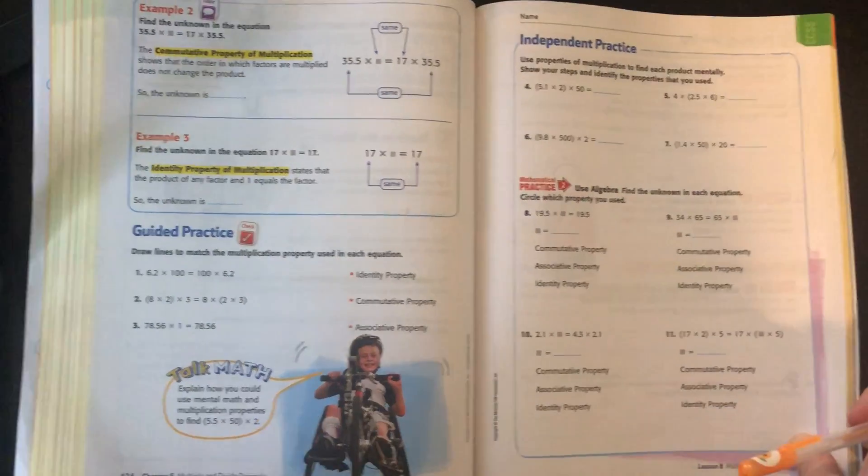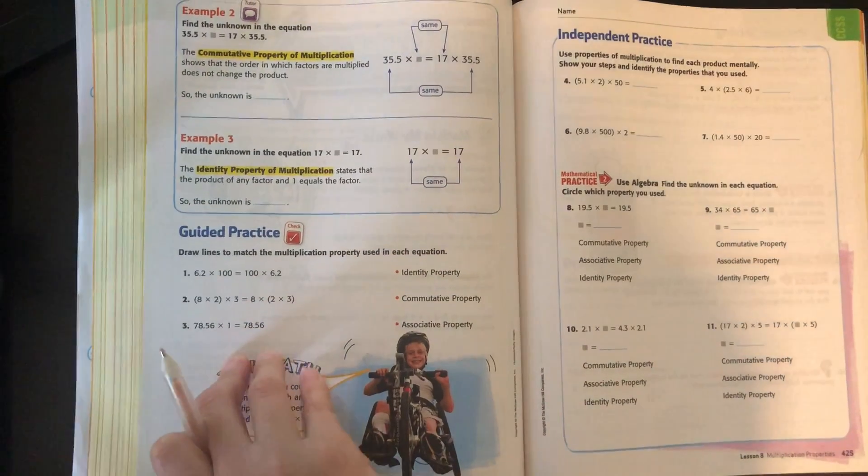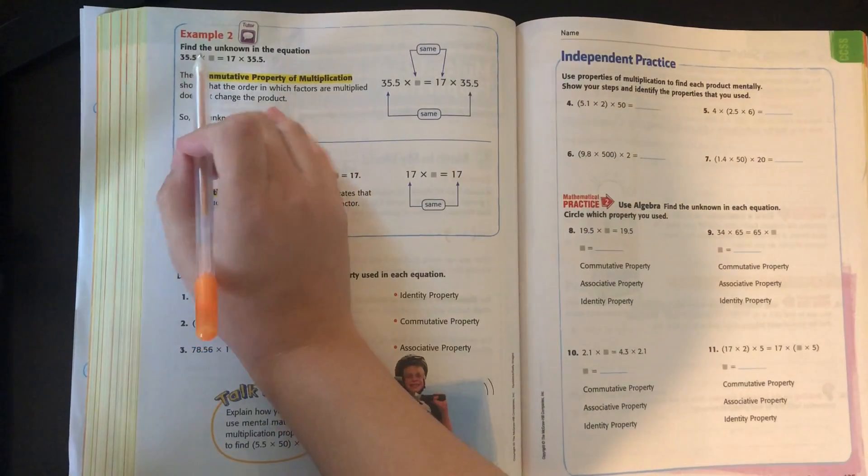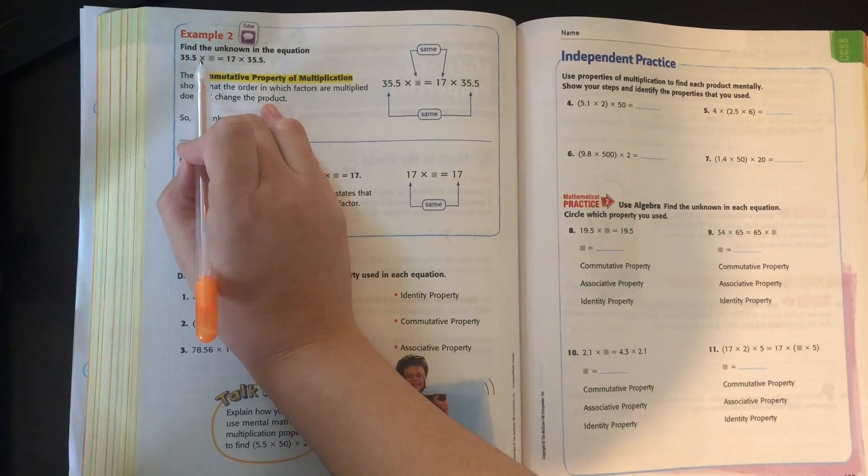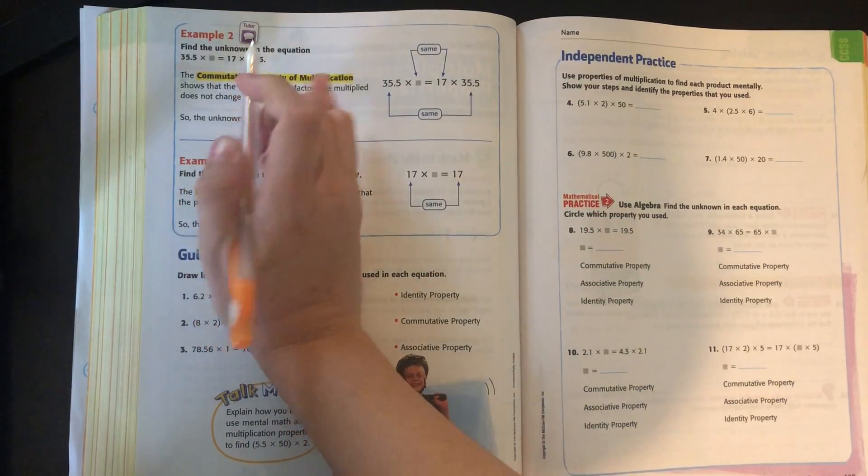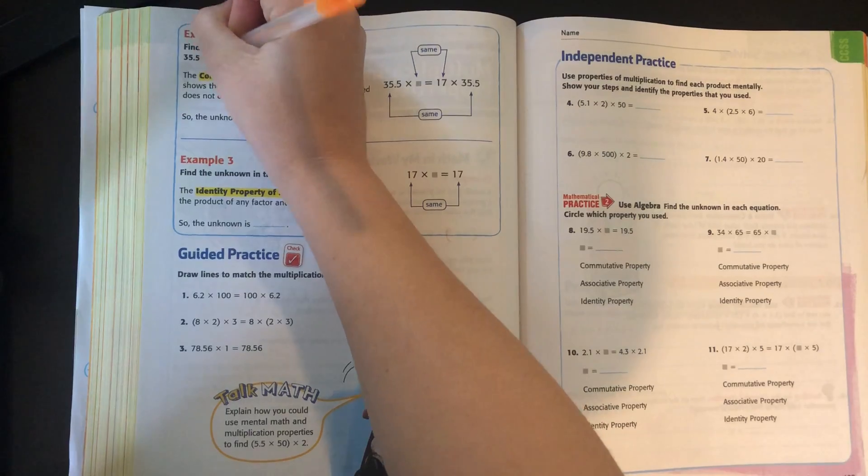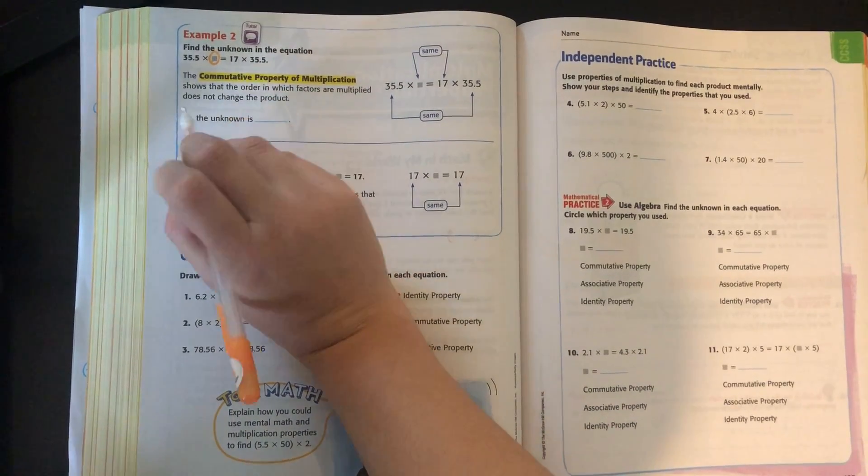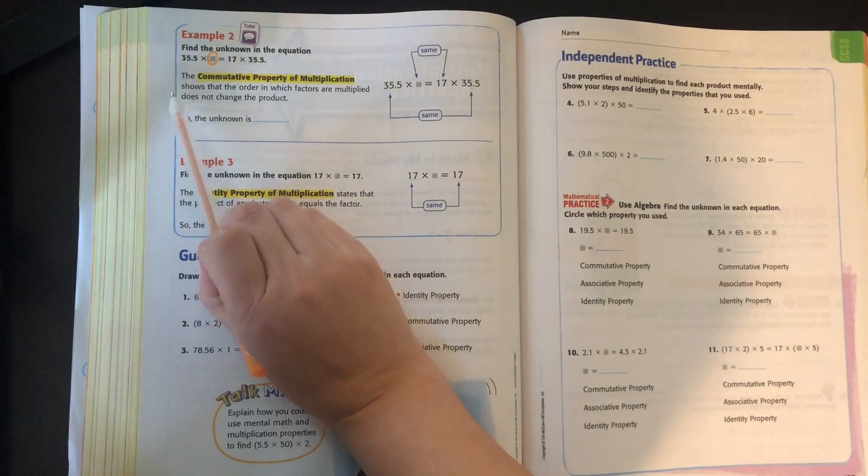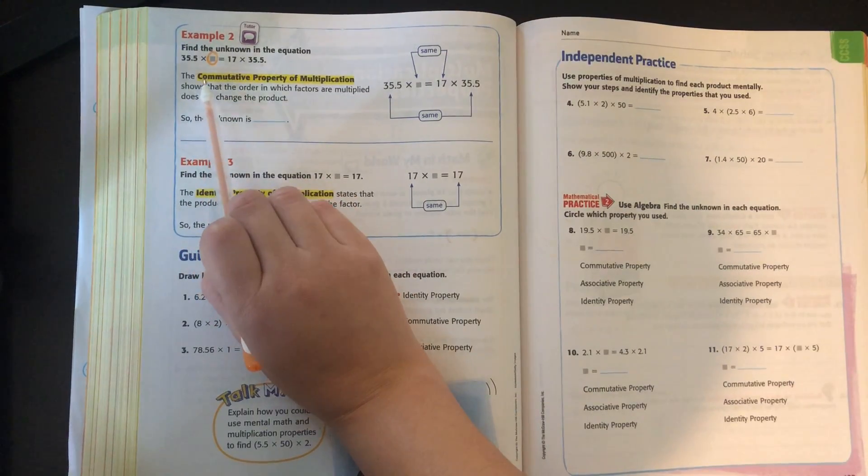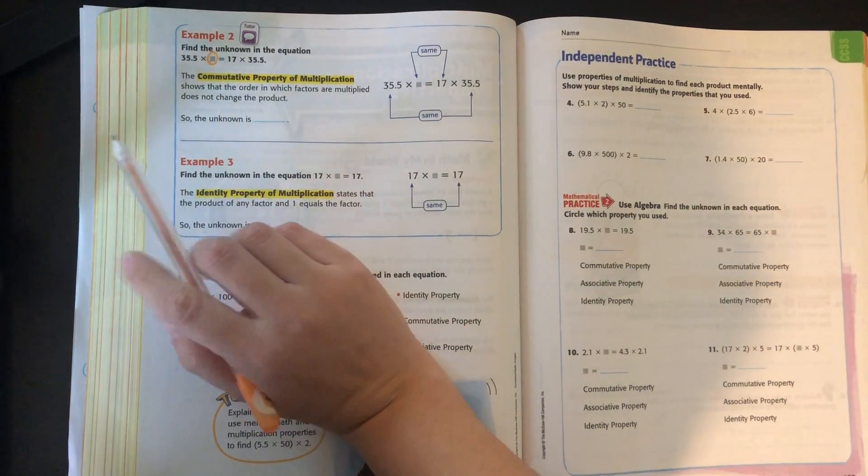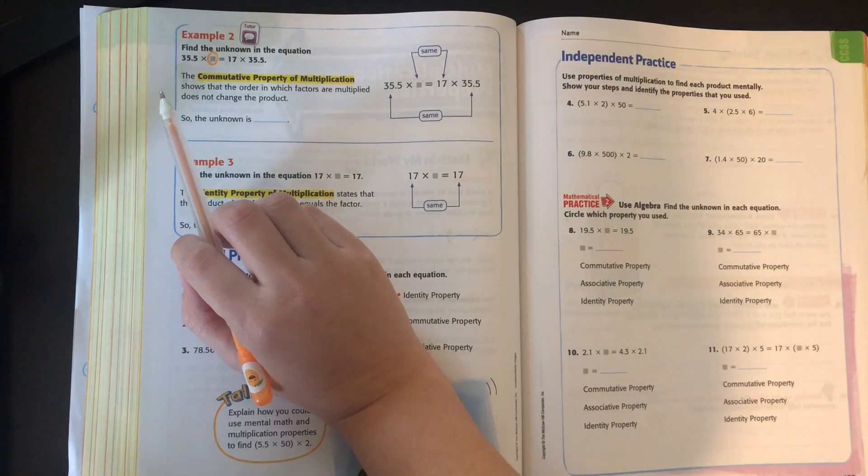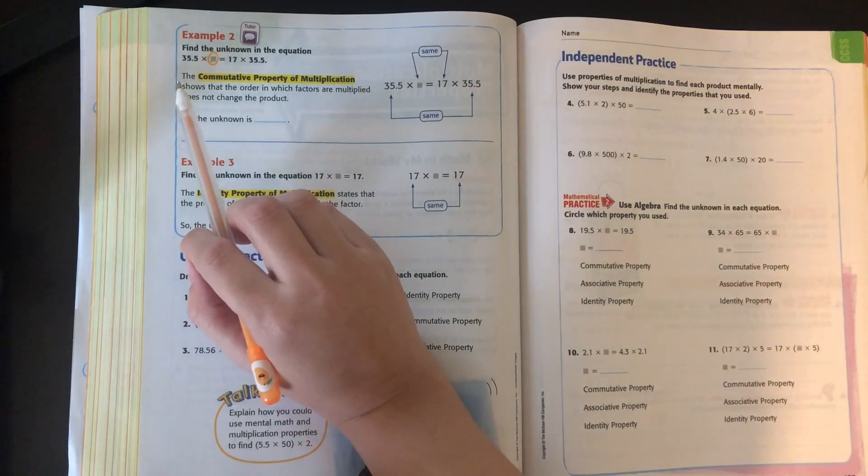So our second example, it's asking us to find the unknown number in this equation. 35 and 5 tenths times something, this is our something, equals 17 times 35 and 5 tenths. So we can use the commutative property of multiplication to find this. It's exactly the same as the commutative property of addition. We're just using multiplication this time.